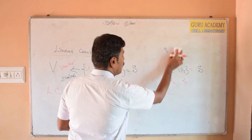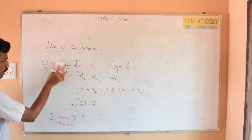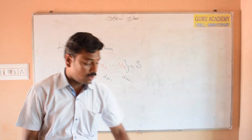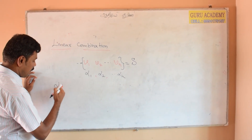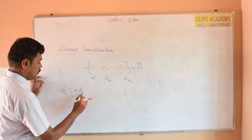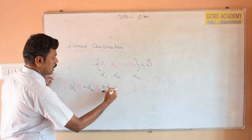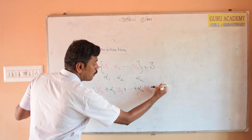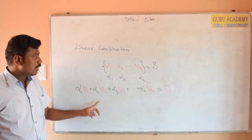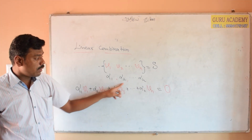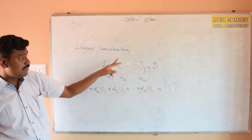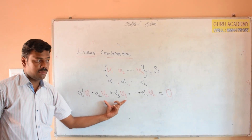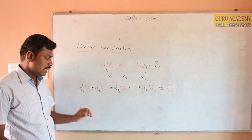The next two points are linearly independent and linearly dependent. Again, we choose the same set S with N vectors. We form the linear combination alpha 1 V1 plus alpha 2 V2 plus alpha 3 V3, and so on. We equate this linear combination to zero. There are two cases to consider.